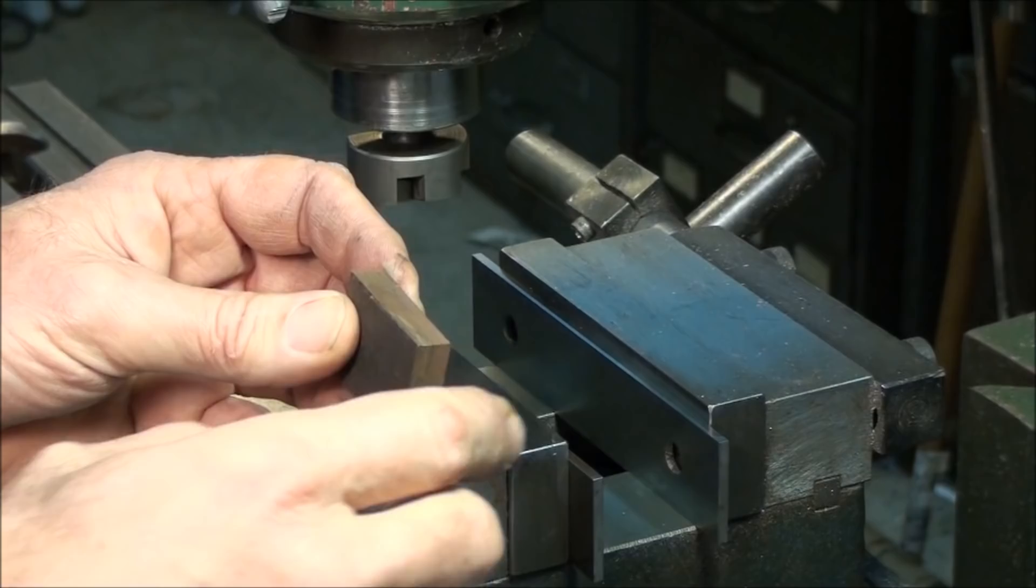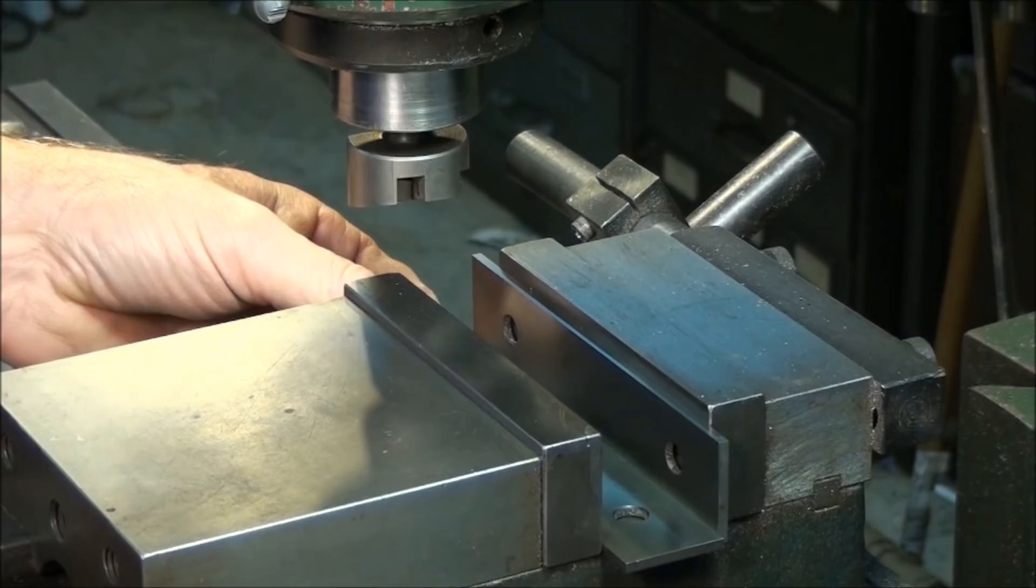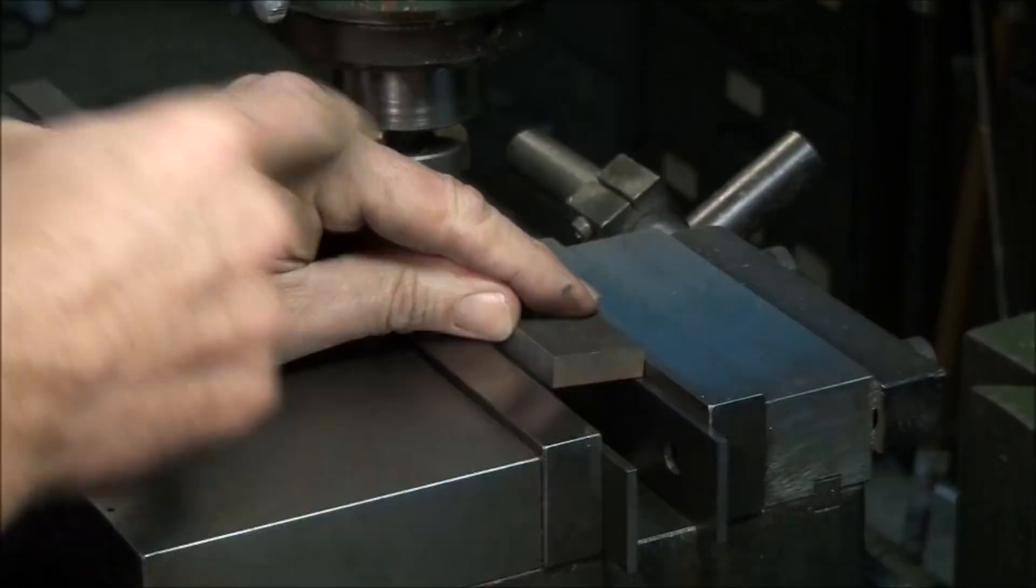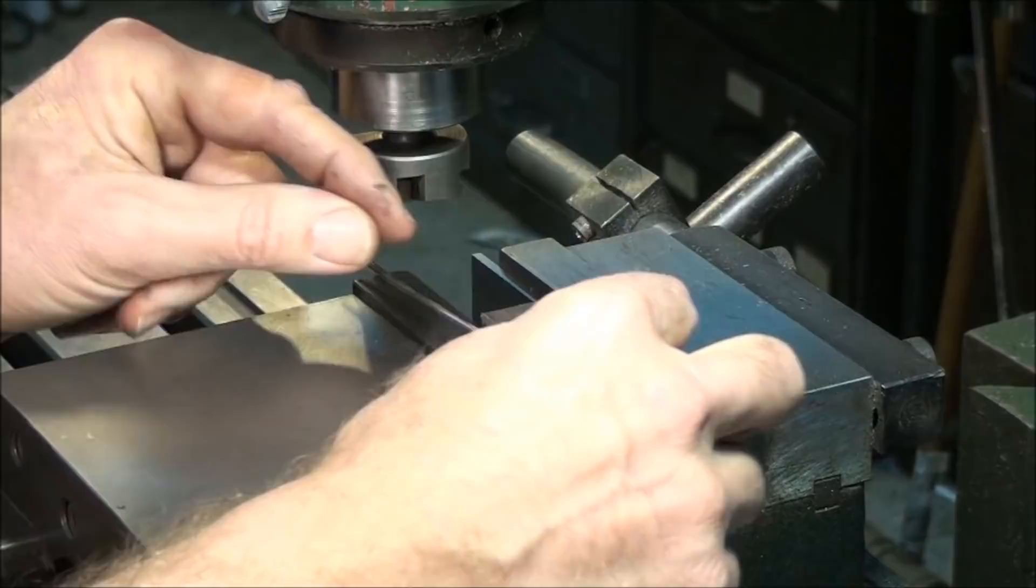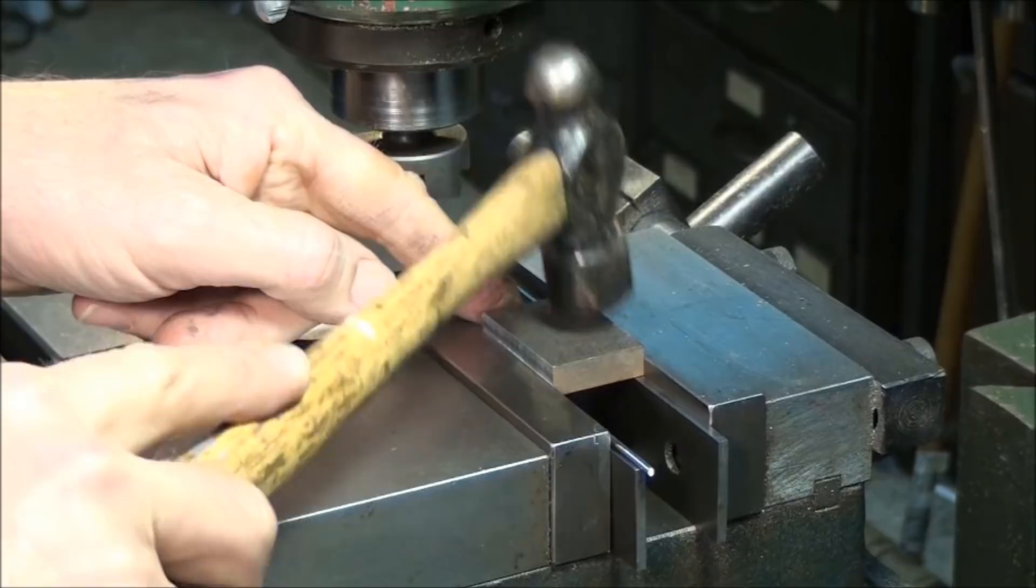I'll pick the straightest edge, looks like this one, and put it against a solid jaw. Put that one against the solid jaw center it up on the vice and I like to put a piece of aluminum welding rod between the movable jaw and the part just because it's a very rough uneven surface and it gives a lot more even clamping pressure.